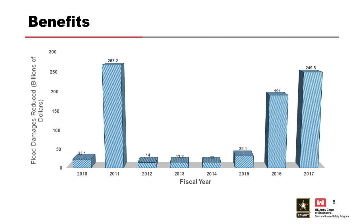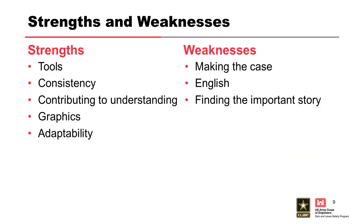You can see how the Corps does this idea of benefits as flood damages reduced. Every year we report to Congress how many flood damages our dams and levees have prevented. In 2011 — anybody know what happened? There was huge flooding all along the Mississippi River. In 2017, a lot of hurricanes — Harvey, Maria — and also a lot of flooding in California, when the Oroville Dam incident happened. So it's another important thing: you've got to understand the benefits and be able to communicate those benefits.